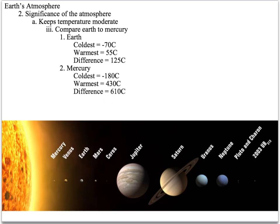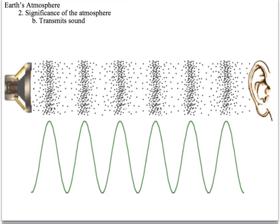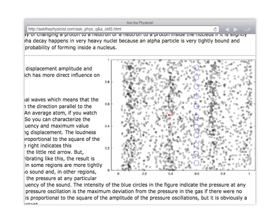Mercury lacks an atmosphere. Without an atmosphere, you wouldn't be able to hear anything, because air particles are required for sound to travel. So transmission of sound is another benefit of the atmosphere. Here you can see a visual of sound waves traveling through the atmosphere — the colliding of particles together and the waves formed as sound travels through the air.